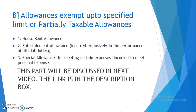Allowances exempt up to a specified limit, or partially taxable allowances, include: number one, house rent allowance; entertainment allowance; and special allowances for meeting certain expenses. This part will be discussed in the next video. The link is in the description box.